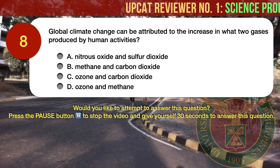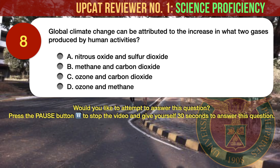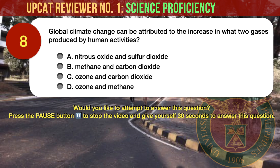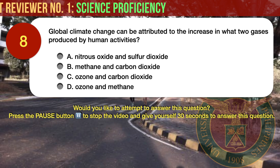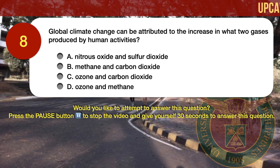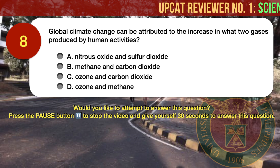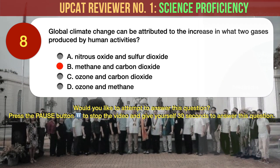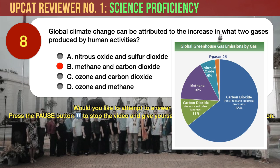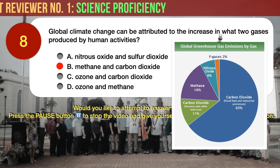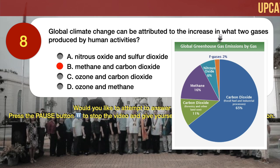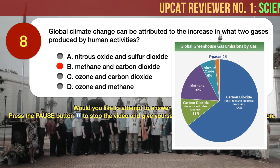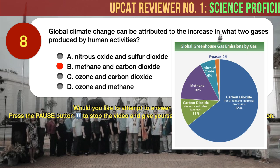Question number 8. Global climate change can be attributed to the increase in greenhouse gases produced by human activities. A. Nitrous oxide and sulfur dioxide. B. Methane and carbon dioxide. C. Ozone and carbon dioxide. D. Ozone and methane. The correct answer is B: methane and carbon dioxide. The primary greenhouse gases in Earth's atmosphere are water vapor (H2O), carbon dioxide (CO2), methane (CH4), nitrous oxide (N2O), and ozone (O3). Of these, carbon dioxide and methane are produced in huge quantities by human activities.